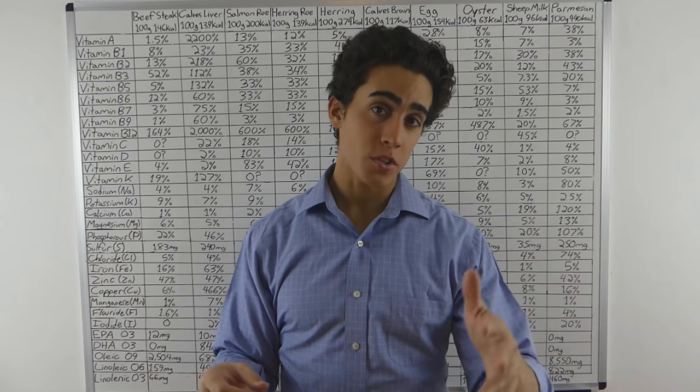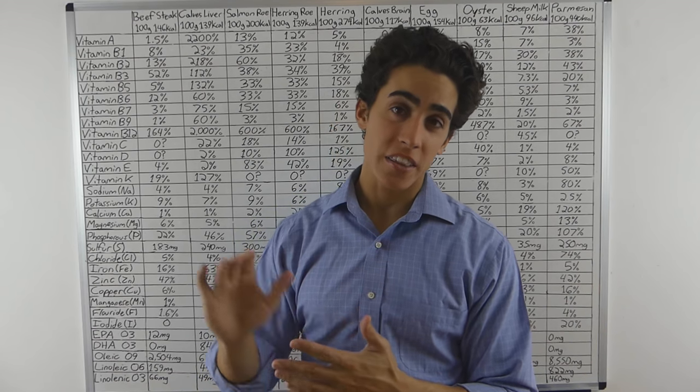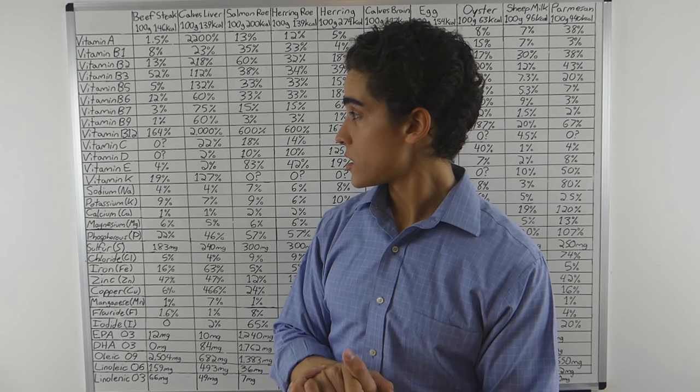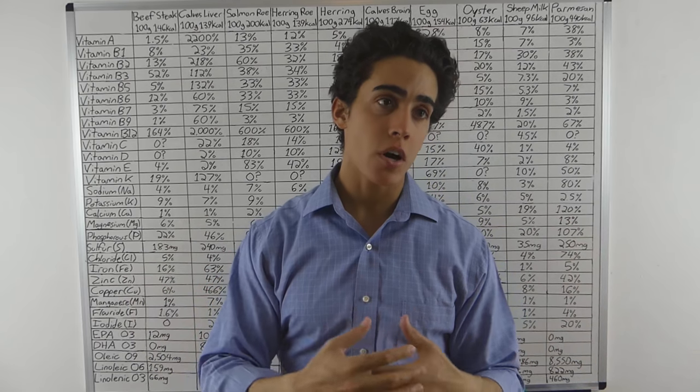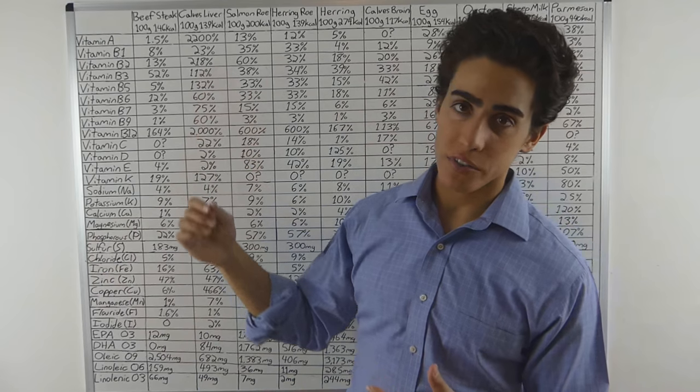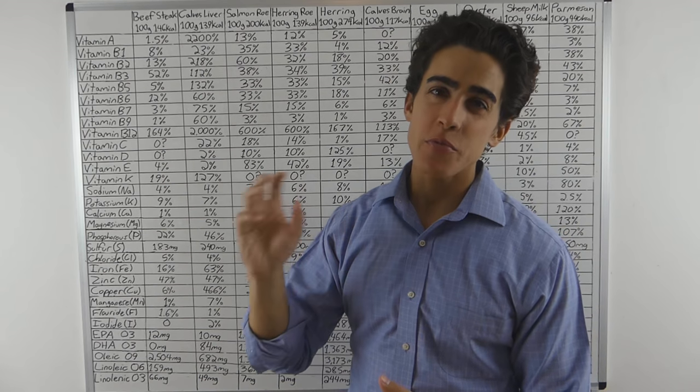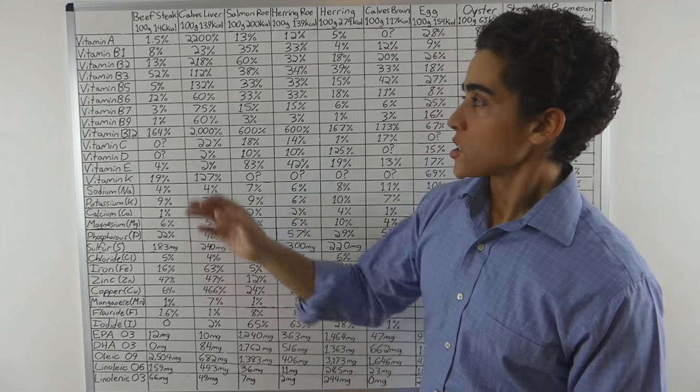That video also goes over why some RDAs are incorrect - like vitamin C RDA is too high, vitamin K is too low, calcium is way too high, vitamin D is way too low. Those two videos - Vegan versus Carnivore Nutrients and RDAs - will help you understand this video a lot better. In addition to those videos, I have one on why nutrients are important.